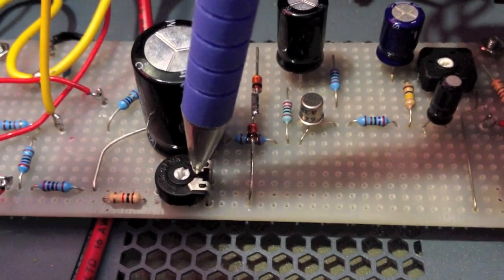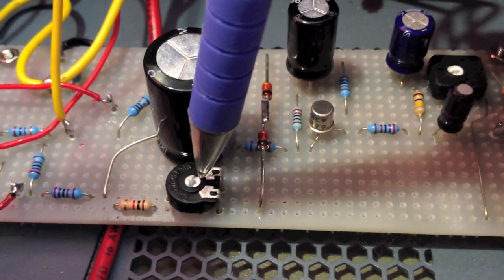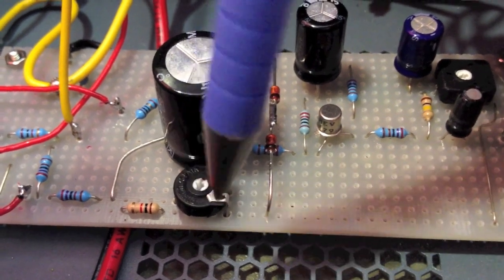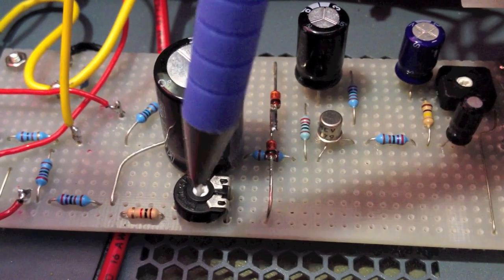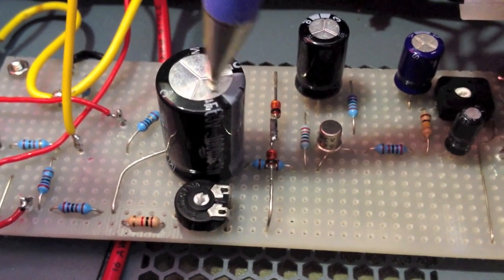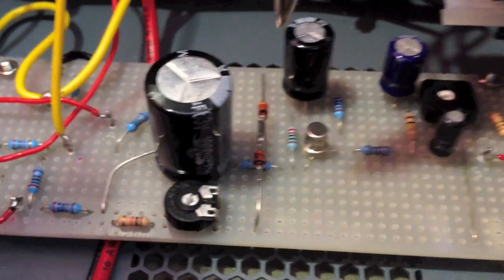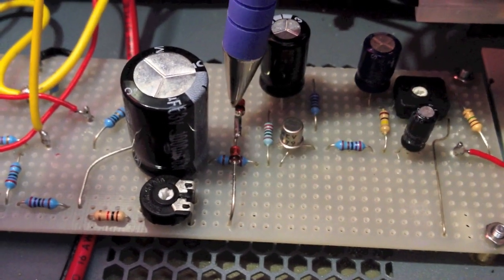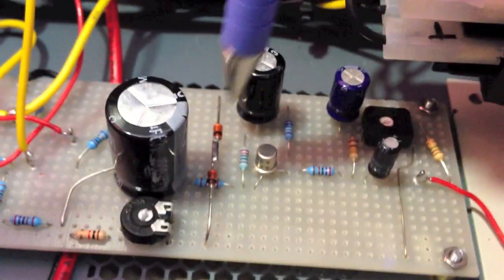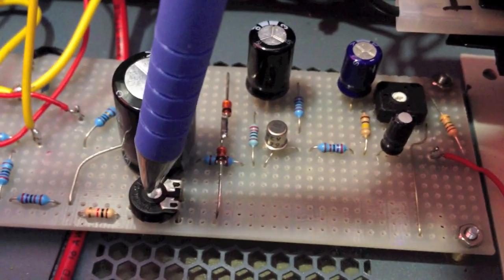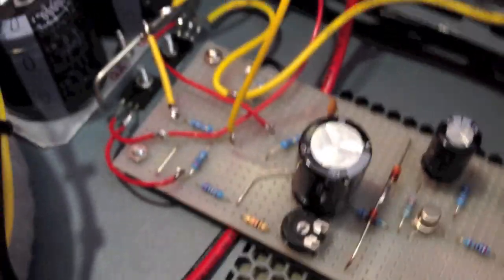Down here is the pot for setting the idle current. This was originally 100k but I changed it to 50k because it was really fiddly to set. This pot charges up a capacitor as you adjust it, so you have to wait for it to catch up. Once set it's quite stable. I've got two 12 volt zeners fed with a 1k ohm resistor to give 24 volts for this part of the circuit and the bias setting.